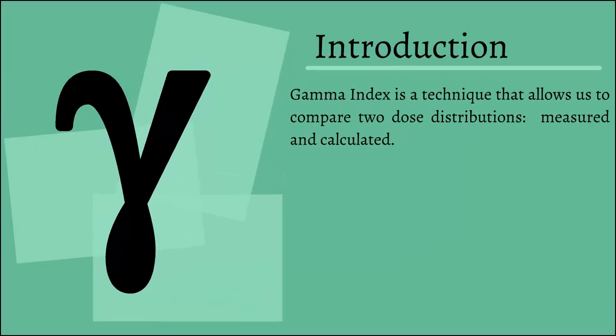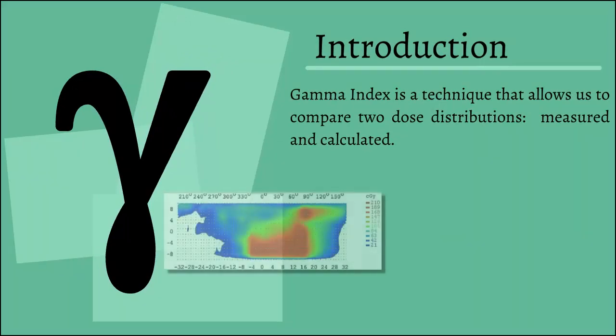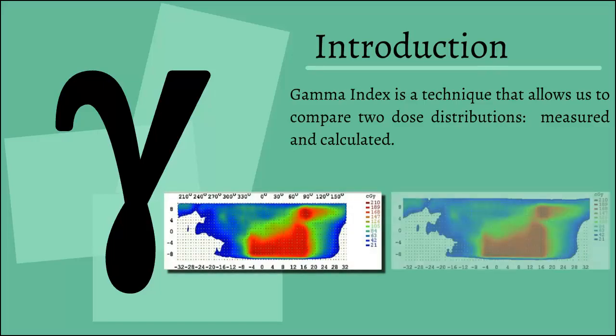Introduction. The gamma index is a technique that allows us to compare two dose distributions, a measured one and a calculated one.